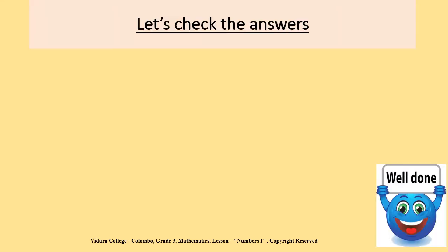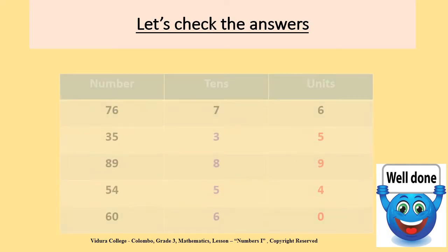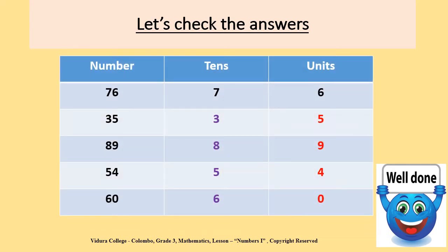Children, shall we check the answers? Number 35 has three tens and five units. Number 89 has eight tens and nine units. Number 54 has five tens and four units. Finally, number 60 has six tens and zero units. Did you get all the answers correct? Well done.